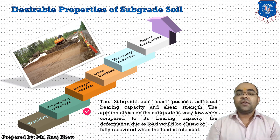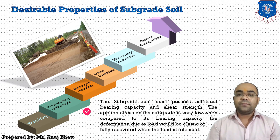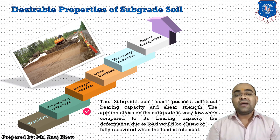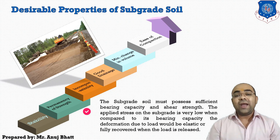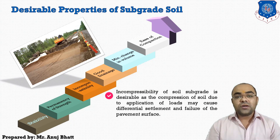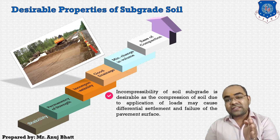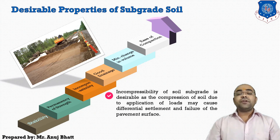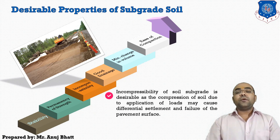The next property is permanency of strength. The subgrade soil must possess sufficient bearing capacity and shear strength. The applied stress on the subgrade should be very low compared to its bearing capacity. Any deformation due to load should be elastic and fully recovered when the load is removed. The next property is incompressibility — the property of soil due to which a decrease in volume occurs under compressive forces. Incompressibility of subgrade soil is desirable, as compression of soil due to application of loads may cause differential settlement and failure of the pavement surface.